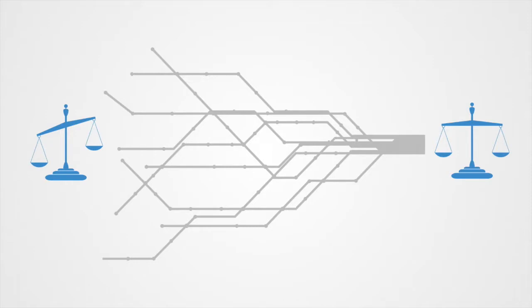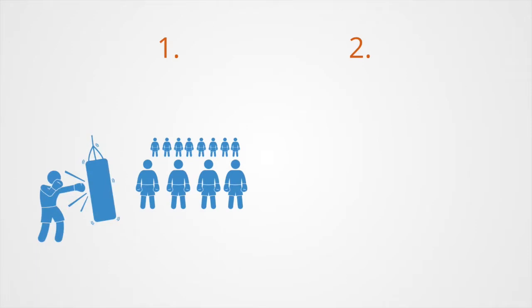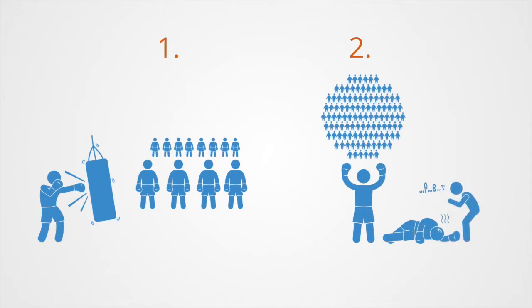Therefore, a successful stable strategy must have at least two characteristics. Firstly, it must be effective against competitors when it is still rare, so that it can enter the previous competing population and grow. Secondly, it must also be successful later when it has grown to a high proportion of the population, so that it can defend itself against future mutants.